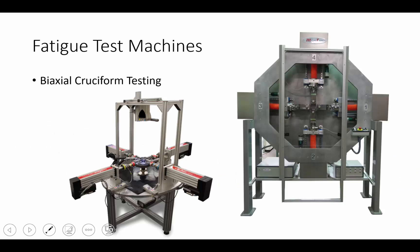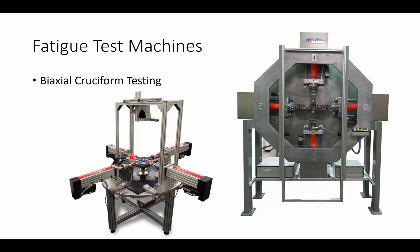Another way that we can apply loading is with biaxial or even triaxial cruciform testing, where multiple actuators are lined up in order for us to very dynamically control loading in different directions. Once we've conducted these experiments, we then want to plot the results of those experiments, whether it's a stress-life or strain-life approach, so we can actually see and compare a uniaxial loading condition versus something like pure torsion or even mixed types of multi-axial loading.